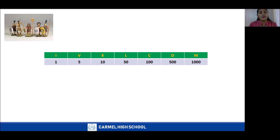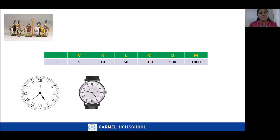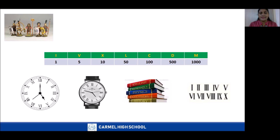The symbols in the first row are Roman numerals, whereas the numbers in the second row are Hindu-Arabic numerals. You have seen Roman numerals on wall clocks, wrist watches, and on the name boards of classrooms. To write Roman numerals for different numbers, we have certain rules to follow.